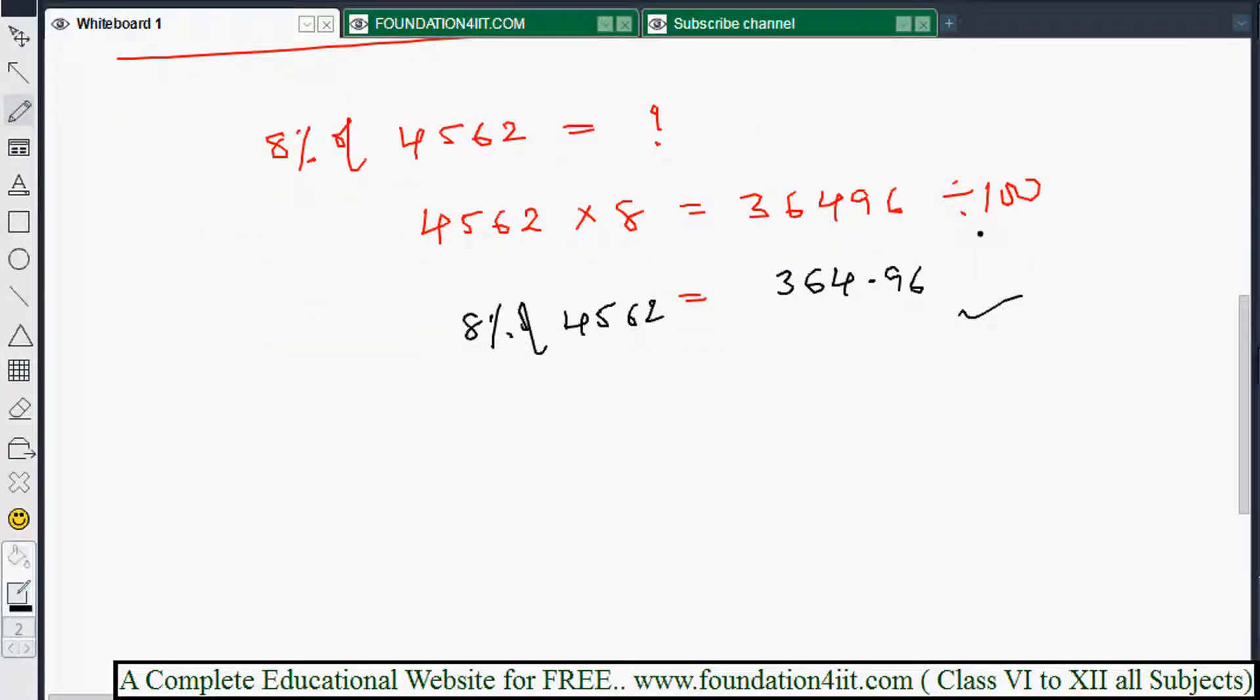Now for example, the question asks about 12%, 12% of 3684. What we'll do is first multiply 3684 into that number, which is 12. If you calculate 12 into 3684, you get 44,208.